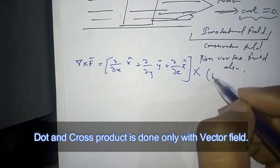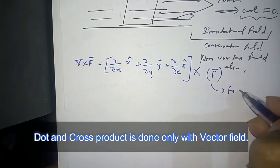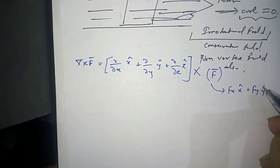This vector field is Fx x cap plus Fy y cap plus Fz z cap.